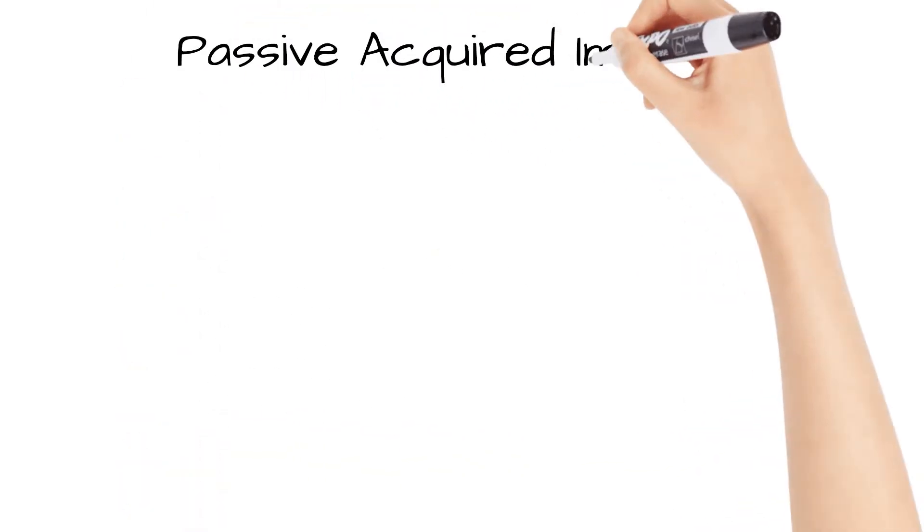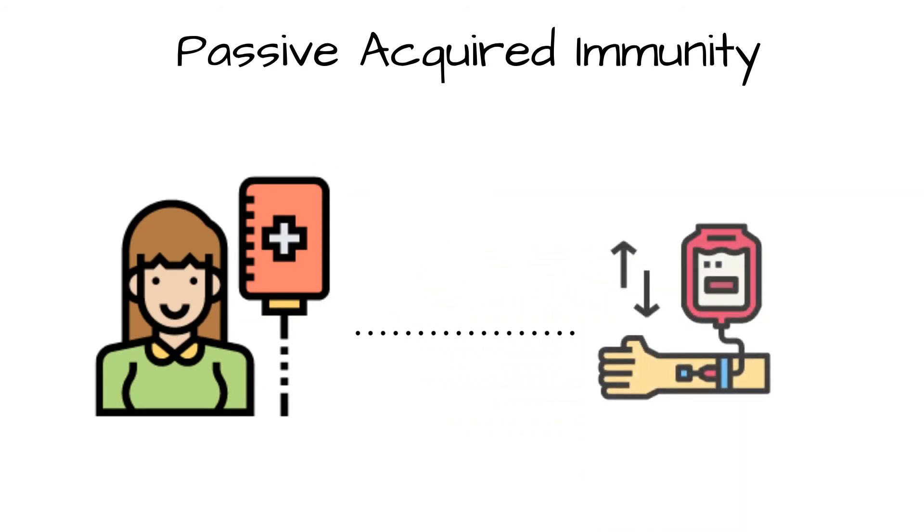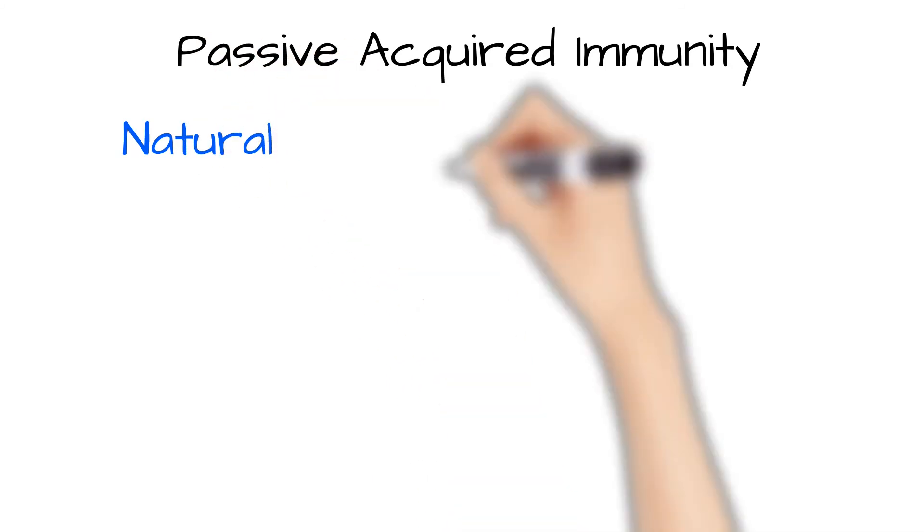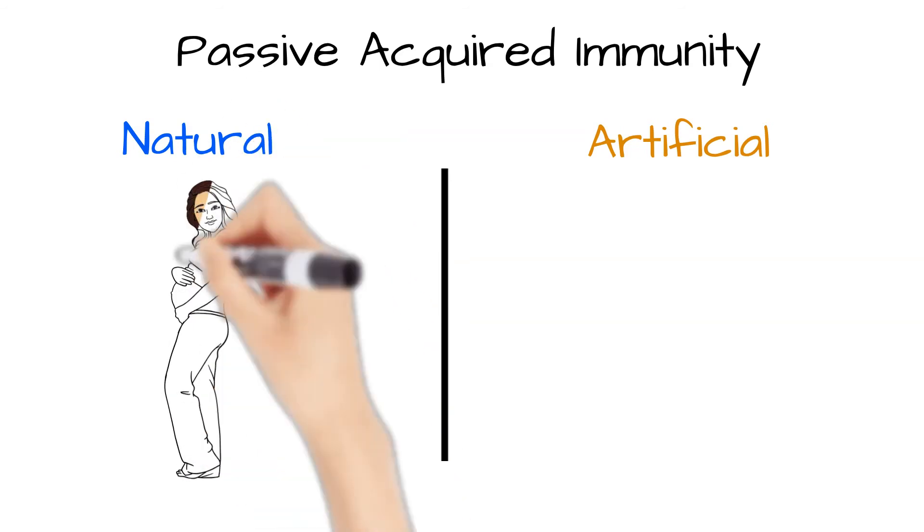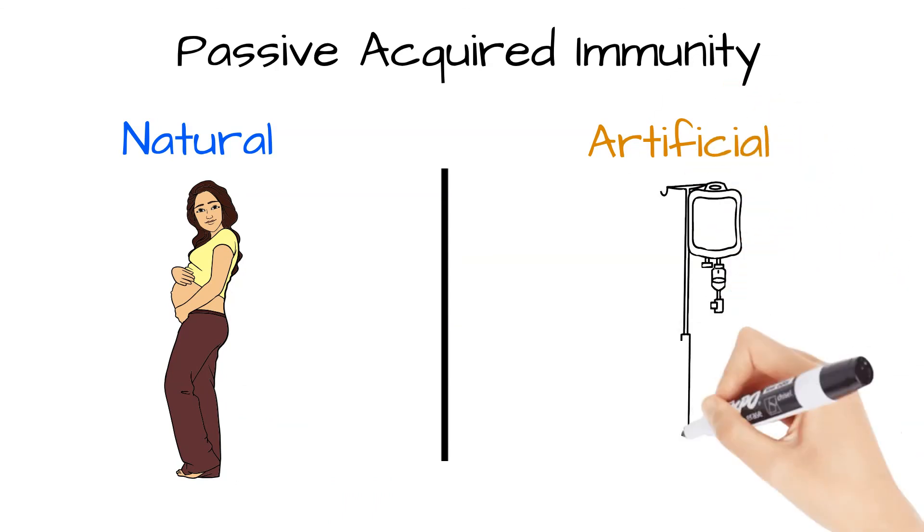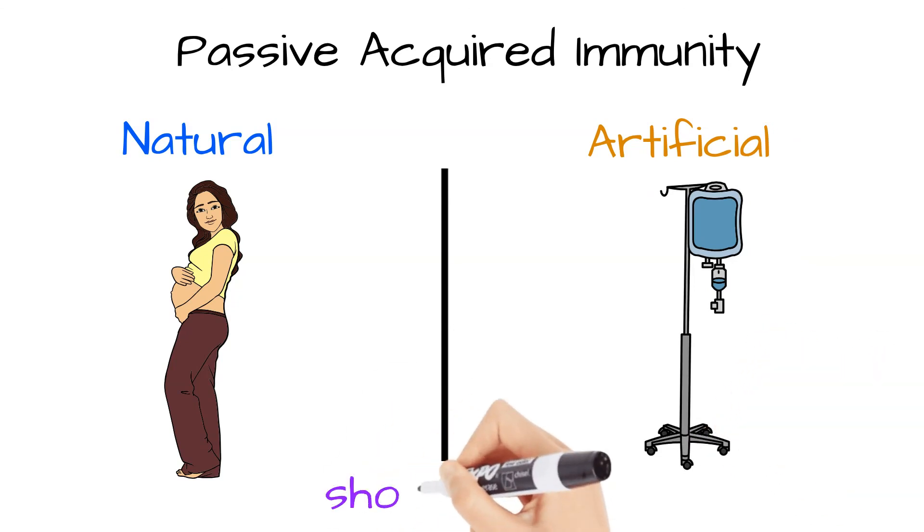Passive immunity happens when preformed antibodies or T cells are transferred from a donor to a recipient. It can be developed either naturally or artificially. It's naturally obtained when immunoglobulins cross the placenta from mother to fetus during pregnancy. Artificial is through infusion of serum antibodies. It's short-lived as antibodies aren't synthesized and they subsequently don't retain memory cells for the antigen. Plus, the donor's antibodies or T cells are eventually destroyed.